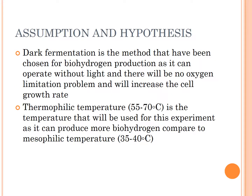Assumptions and Hypothesis: Dark fermentation is the method chosen for biohydrogen production as it can operate without light, there will be no oxygen limitation problem, and it will increase the cell growth rate. The temperature used is thermophilic temperature, in the range of 55°C to 70°C, as it is the most suitable temperature to produce more biohydrogen compared to mesophilic temperature, which is between 35°C to 40°C.